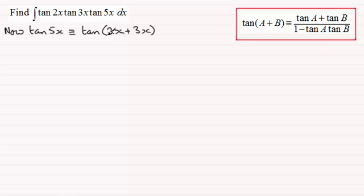And so if I let a be the 2x and b be the 3x in this identity here, then this is going to be identical to the tan of 2x plus the tan of 3x. And this is all divided by 1 minus tan 2x times tan of 3x.